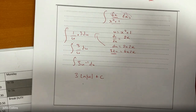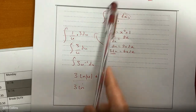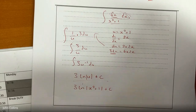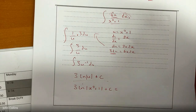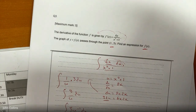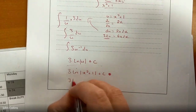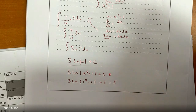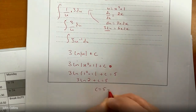You've got to put u back in and find c. u is x² + 1, so the function is 3 ln|x² + 1| + c. They gave you the point (1, 5) as initial conditions to find c. So 3 ln(1² + 1) + c = 5, which is 3 ln 2 + c = 5, so c = 5 − 3 ln 2.